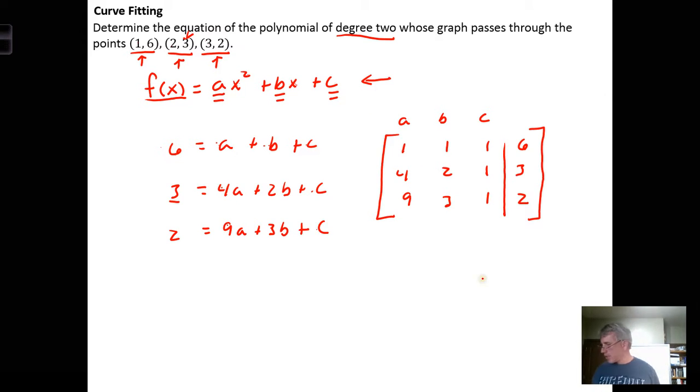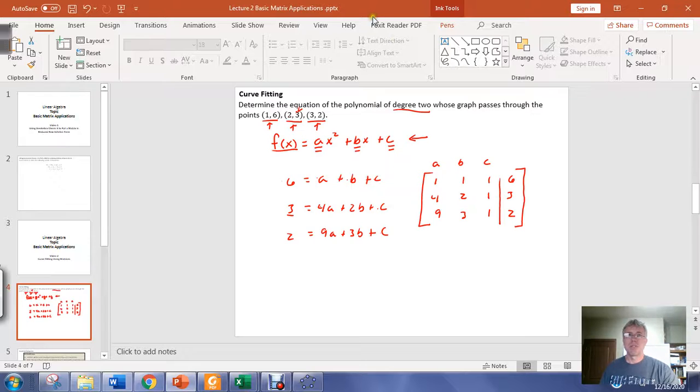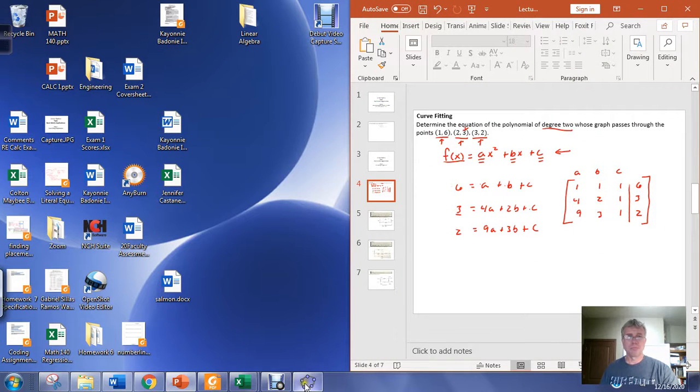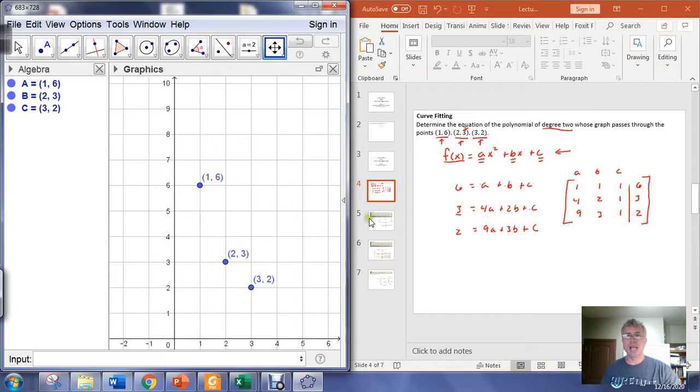Here we have an augmented matrix. We can put this augmented matrix into GeoGebra and put it into reduced row echelon form, then interpret the results. I'll bring GeoGebra open. I've already pre-plotted the points (1, 6), (2, 3), and (3, 2).